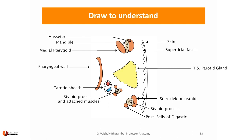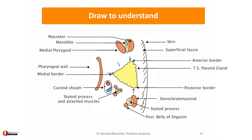Using this image now, we are going to understand the surfaces and borders. This border directed towards the mandible is the anterior border. This one directed towards the mastoid process is the posterior border, and this one directed towards the wall of pharynx is the medial border. Between the anterior and the medial is the anteromedial surface. Between the medial and posterior is the posteromedial surface, and towards the skin is the superficial surface.